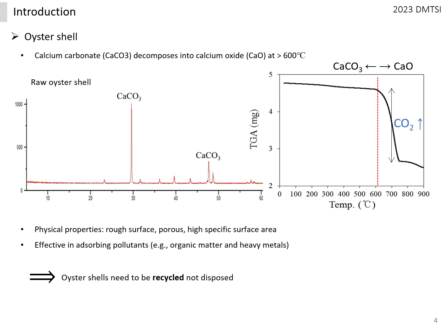Most of the oyster shells are composed of calcium carbonate. When thermally decomposed through pyrolysis, they release carbon dioxide and decompose into calcium oxide while exceeding a certain temperature.